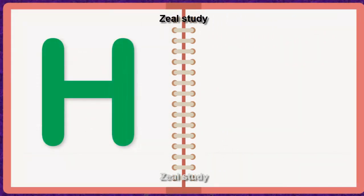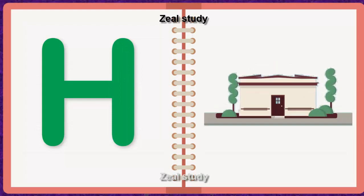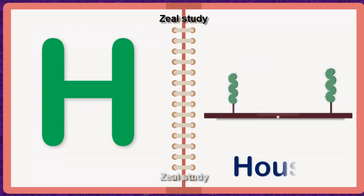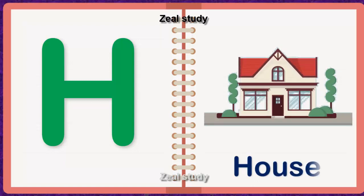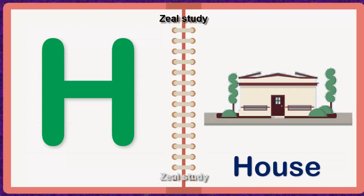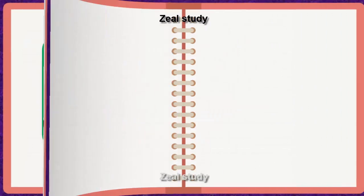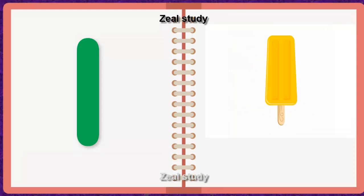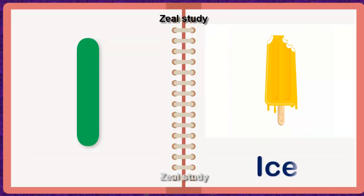H for House. H, O, U, S, E. House. I for Ice. I, C, E. Ice.